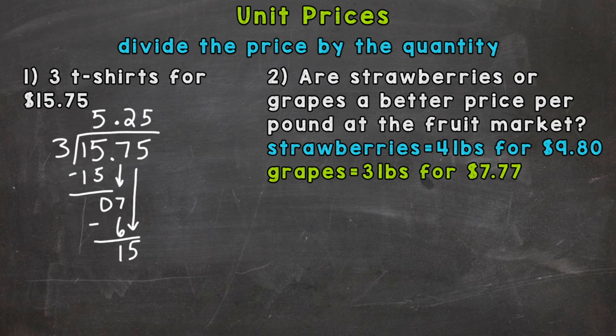5. 5 times 3 is 15, subtract to wrap things up here and we get $5.25 per t-shirt.